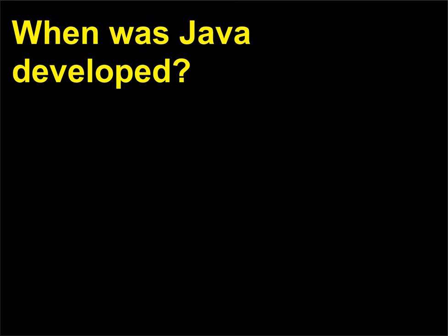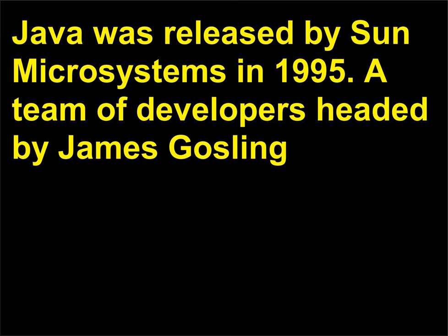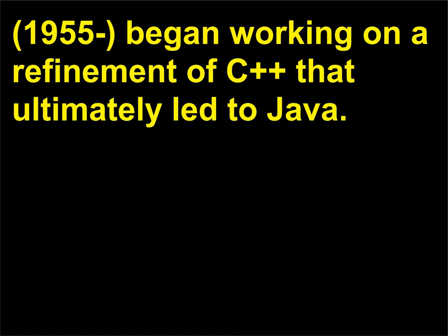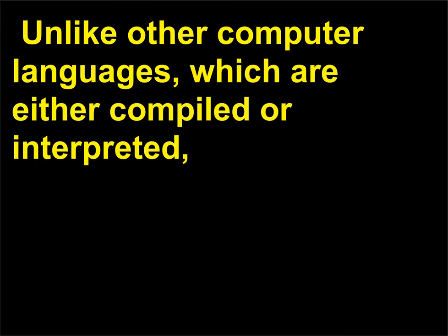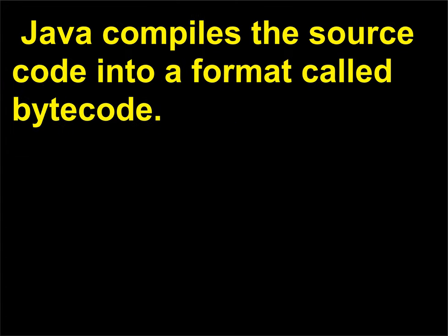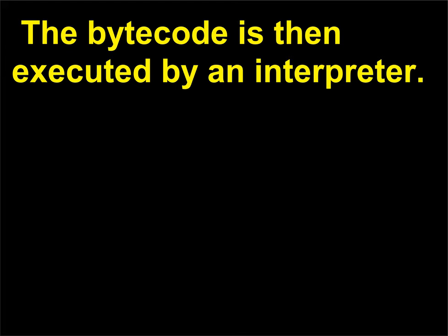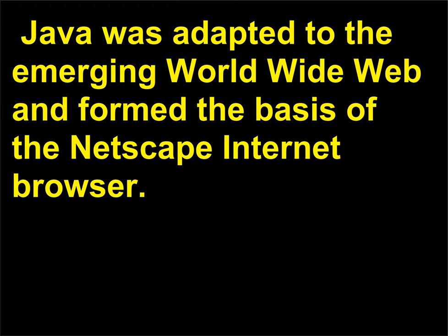When was Java developed? Java was released by Sun Microsystems in 1995. A team of developers headed by James Gosling (1955) began working on a refinement of C++ that ultimately led to Java. Unlike other computer languages, which are either compiled or interpreted, Java compiles the source code into a format called bytecode. The bytecode is then executed by an interpreter. Java was adapted to the emerging World Wide Web and formed the basis of the Netscape Internet Browser.